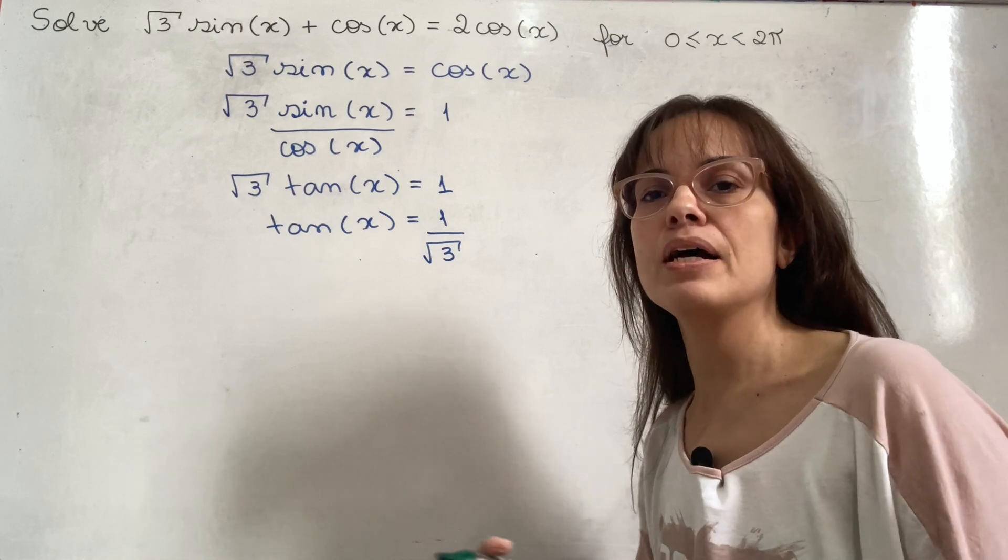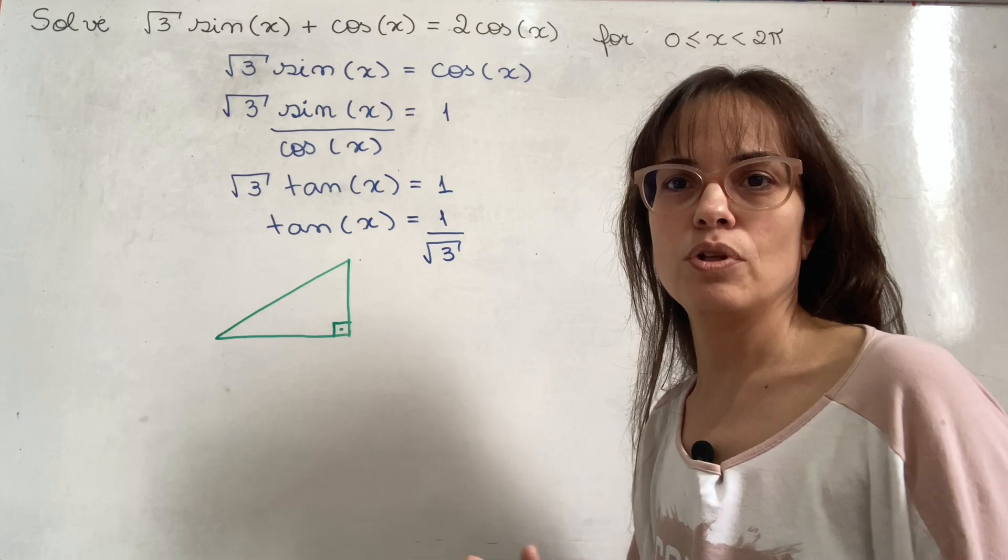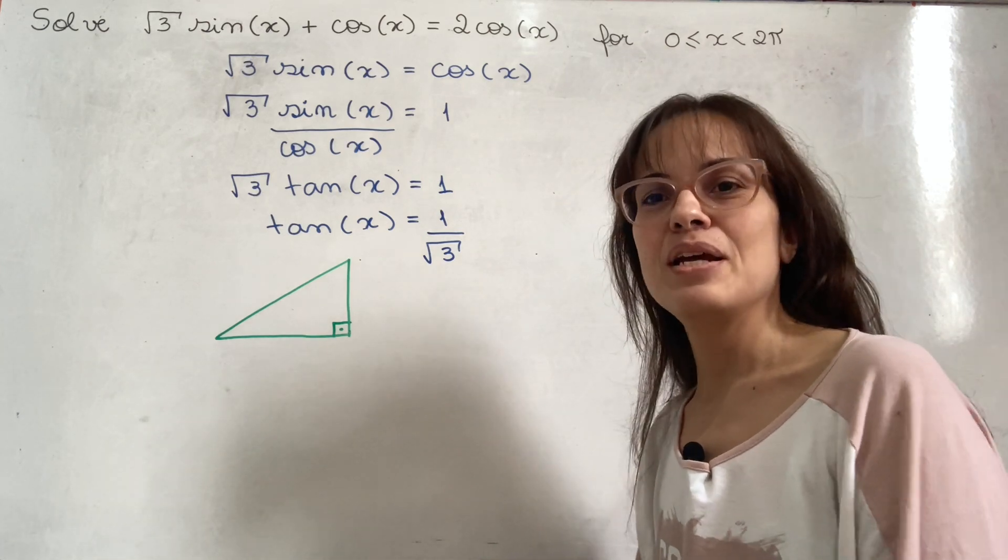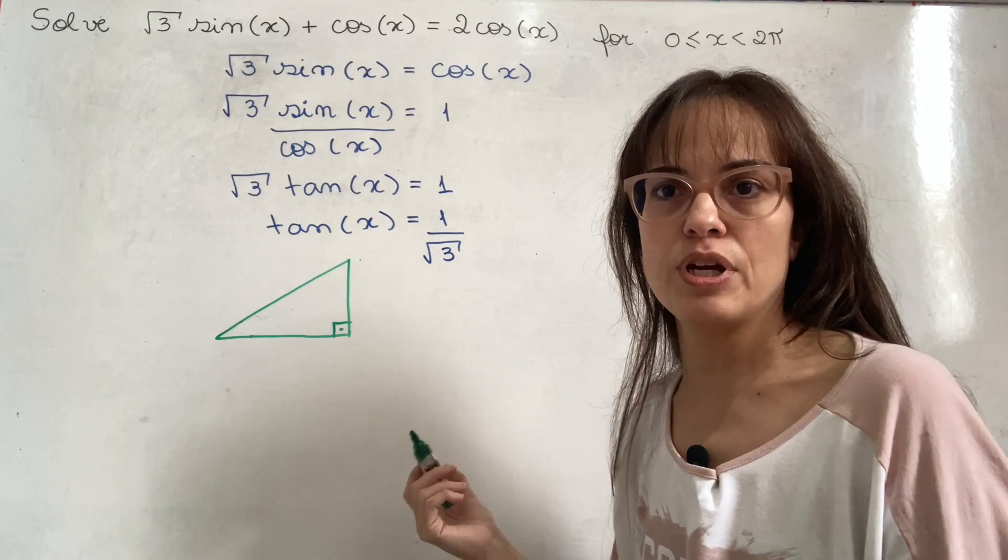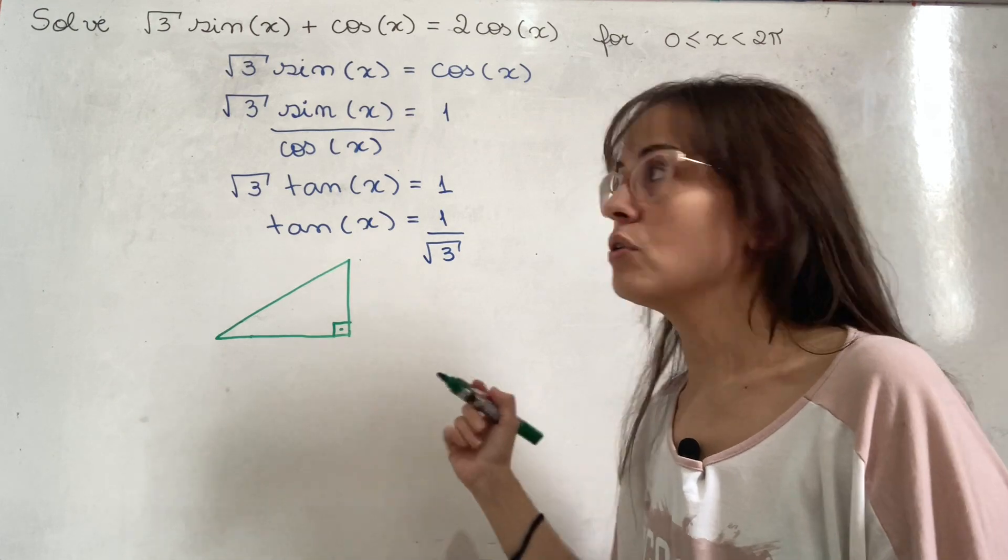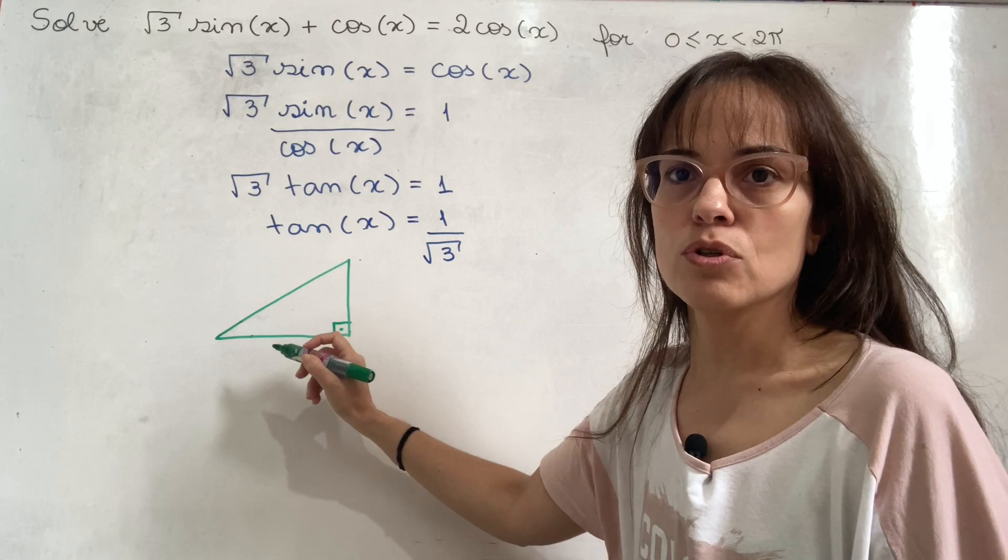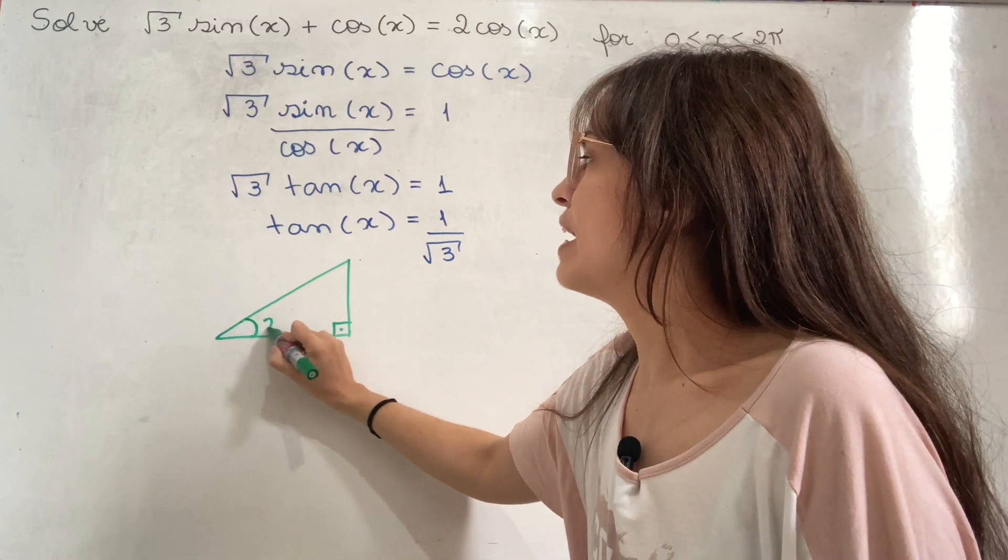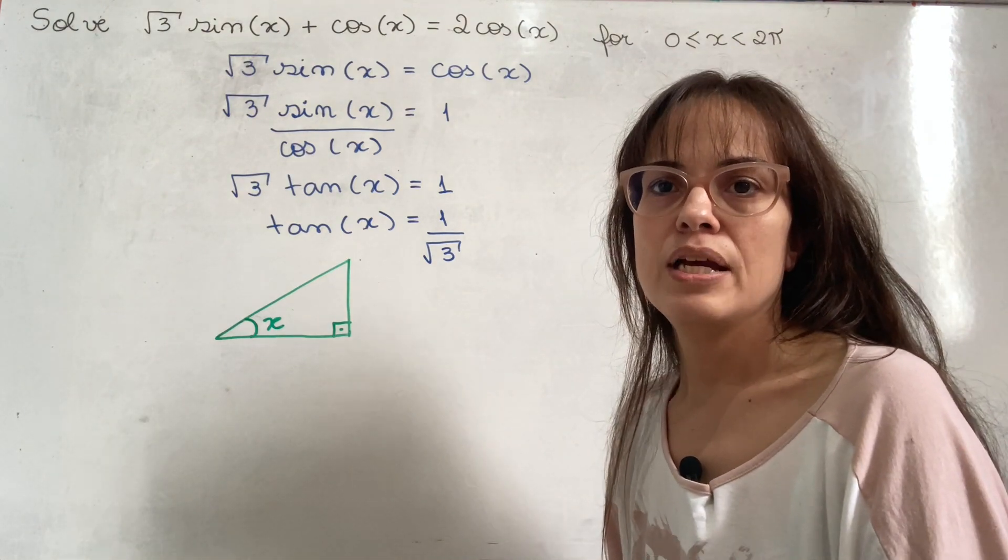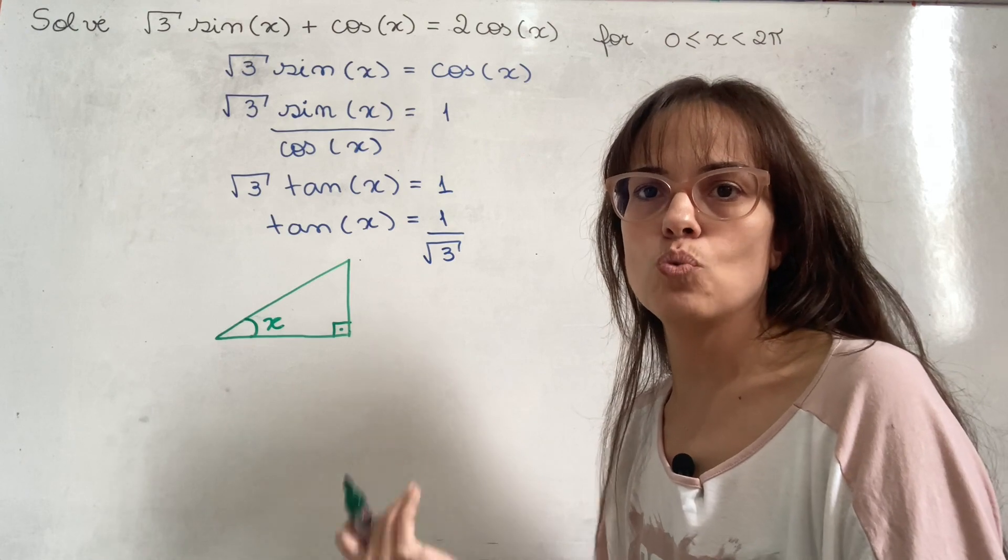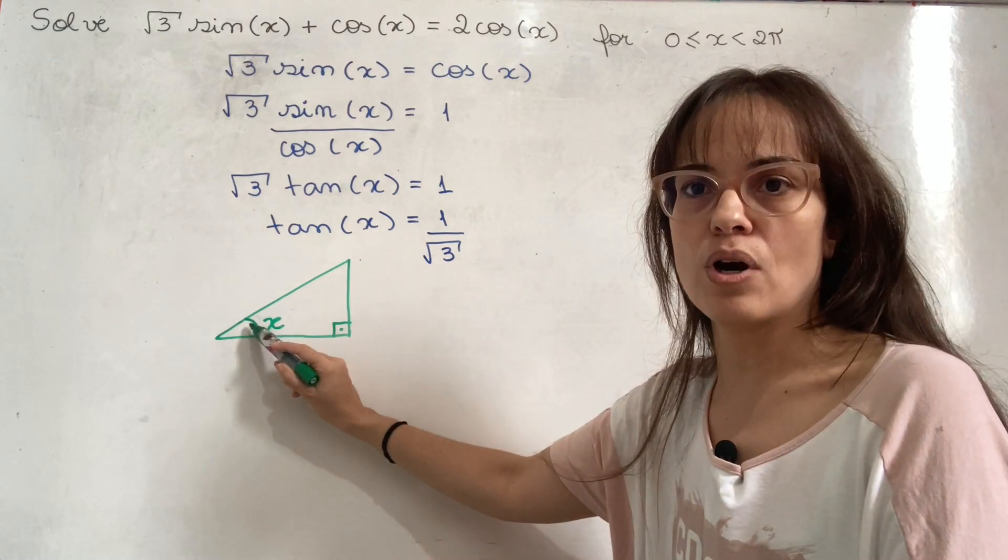I'm going to choose to do that by drawing a little right triangle just because I know a lot of things about the trigonometric ratios in right triangles. So this is just a generic triangle. There's nothing special about the way I'm drawing it. I'm going to use it though to figure out some things about this x. I need to put it somewhere in the triangle so I'm going to put it here. The x is this angle here and the information that I have from the question is that the tangent of that angle is one over the square root of three. So what is the tangent of an angle in a right triangle? That's the opposite leg side divided by the adjacent leg.